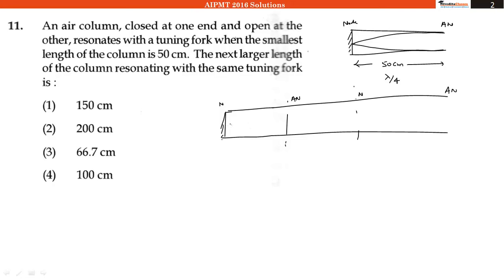So now our wave will look like this. This length was equal to 50 centimeter. Our distance between node and antinode is equal to 50 centimeter. So this will be also 50, this will be also 50. So we will have the total length equal to 150 centimeter.